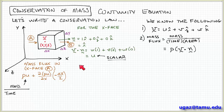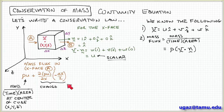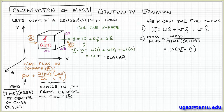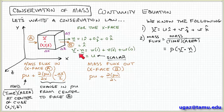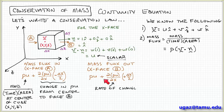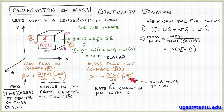Similarly, we can apply the same analysis at face B to get the mass flux out of the x face at B. Again, since its normal vector is also in the x direction, we have rho u, and then we map the quantity out to face B: the partial derivative of rho u with respect to x times the distance from the center to face B, which is plus delta x over 2.